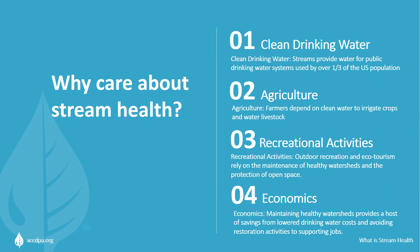There are several reasons why each and every one of us should care about stream health. Streams play a critical role in the quality and supply of our drinking water by ensuring continuous flow of clean water to surface waters and helping recharge underground aquifers. In the continental US, 357,000 miles of stream provide water for public drinking water systems, which is used by approximately one third of the US population. Agriculture and stream health are often at odds, as agriculture contributes to many negative impacts on streams. However, farmers depend on clean water to irrigate farm crops and water livestock that we depend on for food. Healthy, intact ecosystems are essential to the multitude of activities we do on the water, from boating and swimming to fishing and watching wildlife. Outdoor recreation and ecotourism rely on the maintenance of healthy watersheds and the protection of open space.